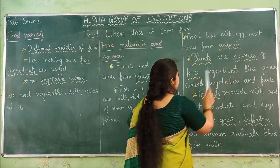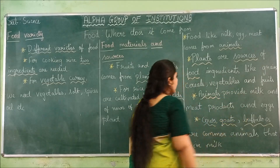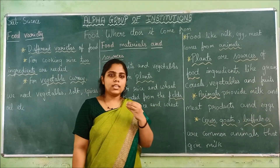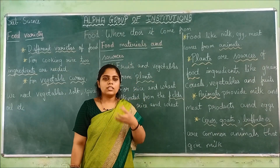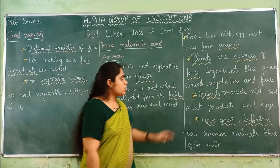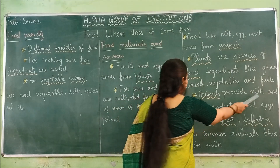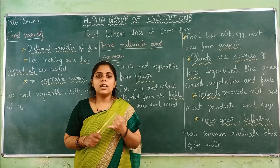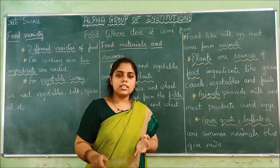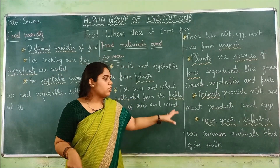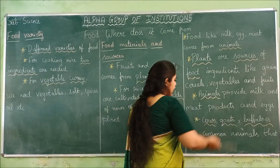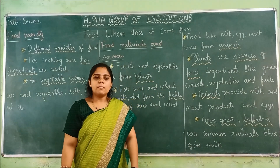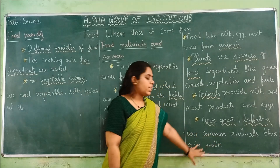Plants are sources of food ingredients like grains, cereals, vegetables, and fruits. From plants we not only get rice and wheat, but also cereals, all the grains, dal — everything comes from plants. Animals provide milk and meat products and eggs. Milk products include butter, cheese, and ghee. Cows, goats, and buffaloes are the common animals that give milk.